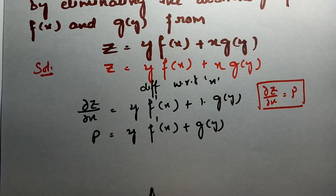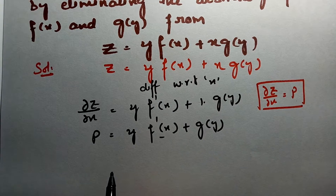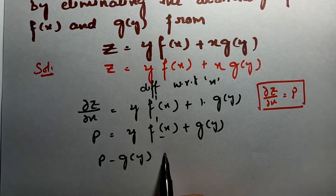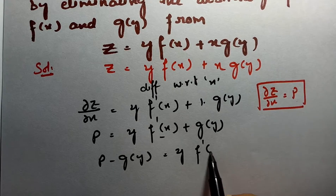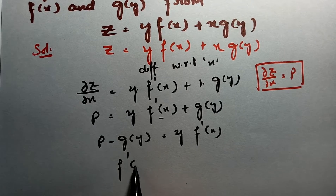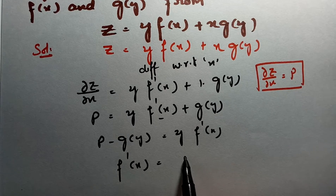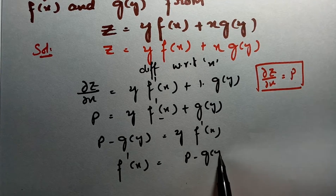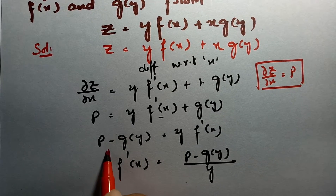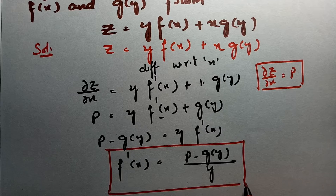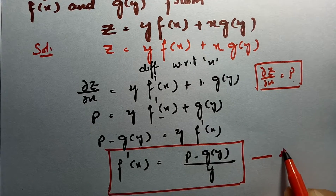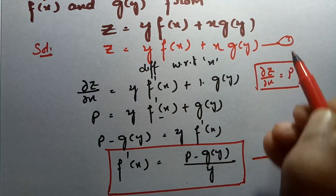I am taking the value of f'(x) from here. Then it will be p − g(y) = y·f'(x). Therefore, f'(x) is equal to (p − g(y))/y. So, if I differentiate with respect to x, I got this equation for f'(x). I am keeping it as equation 2 and the original is equation 1.